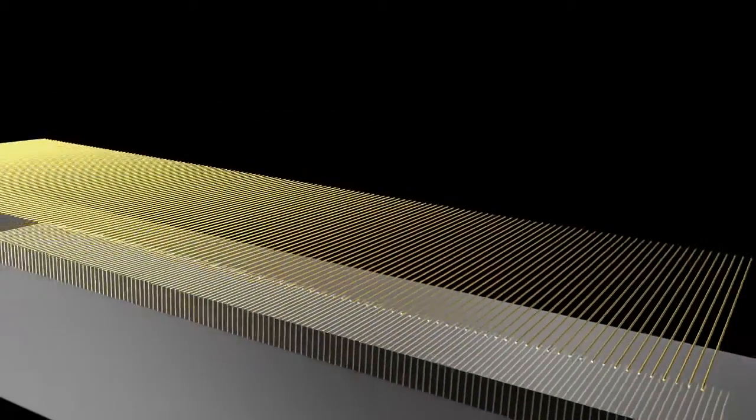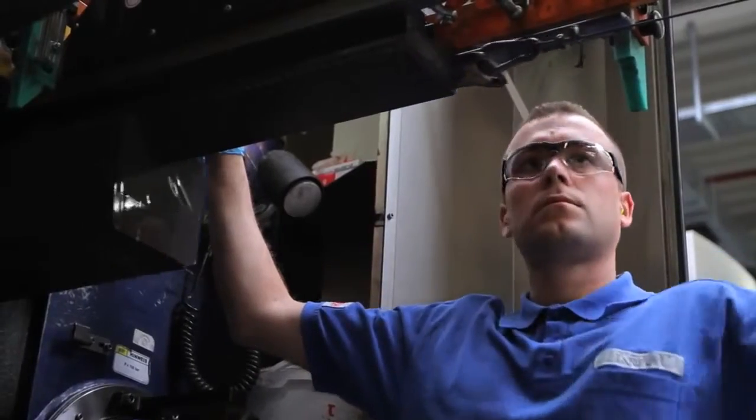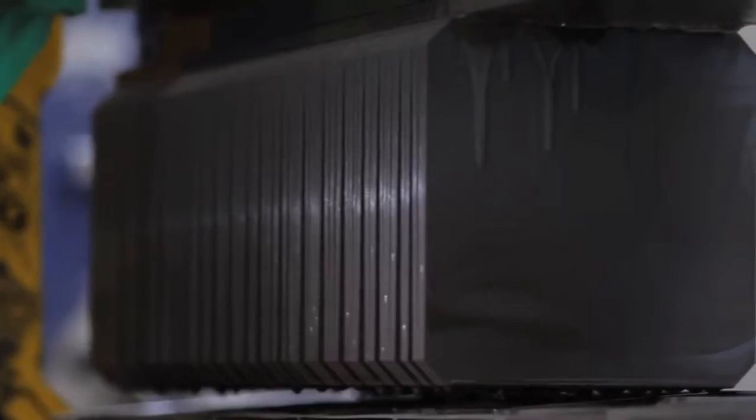The ingots are cut into millimeter-thin slices using a very fine wire saw. The individual slices are called wafers and form the basis of each solar cell.